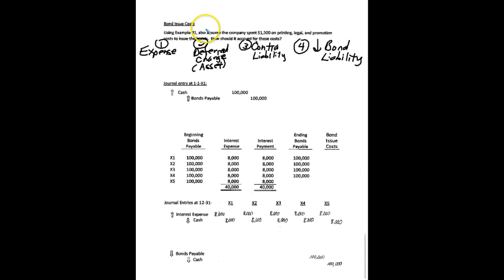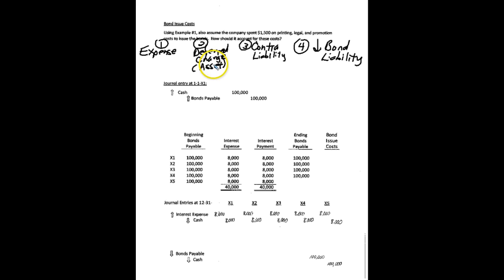The second topic is the idea of bond issue costs, because there usually are some costs involved in getting the bonds out the door. Using example one, where the bonds are sold at par, let's say the company spent $1,500 on printing, legal, and other promotional issues. The authors of the textbook went through the theory behind it: we could record those as an expense — the authors actually theoretically supported that — or we could record it as a deferred charge, which in essence is an asset, and if we set it up as a deferred charge or an asset, then we can amortize that over the life of the bond.